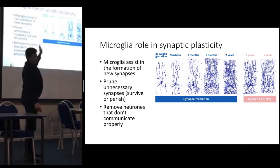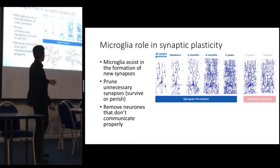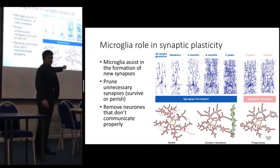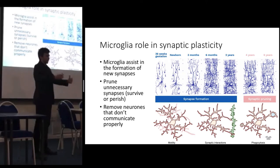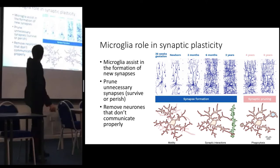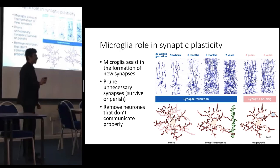Microglia have a role in synaptic plasticity. In early development — up to about two years — they assist in the formation of new synapses. Afterwards they prune the synapses, checking whether they're useful or not: if a synapse has been used, they spare it; if it has not been used, it gets swallowed in phagocytosis. The same applies to redundant neurons that don't communicate — survive or perish.